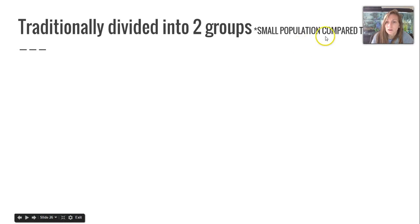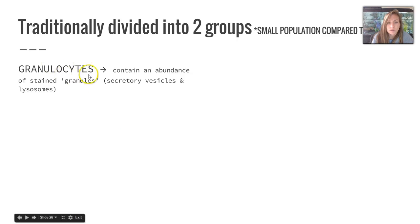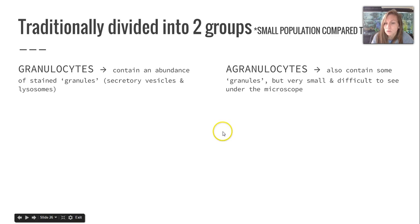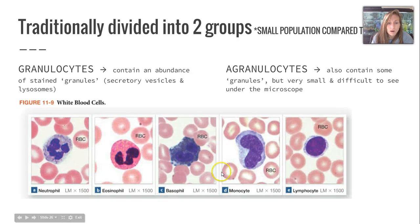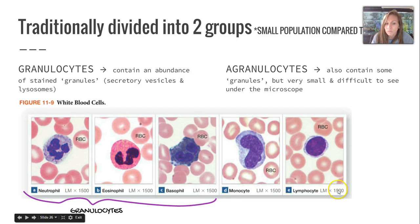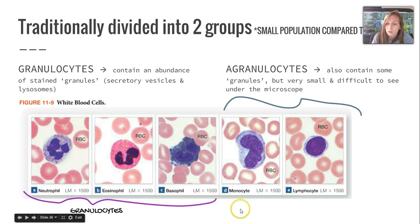White blood cells are traditionally divided into two groups, and they represent a much smaller population compared to red blood cells. One group is granulocytes, which contain an abundance of stained granules that are actually secretory vesicles and lysosomes. Then you have the agranulocytes, which is kind of misleading because they do contain granules, but they're very small and difficult to see under the microscope even when stained. The granulocytes are neutrophils, eosinophils, and basophils, while monocytes and lymphocytes are the agranulocytes. Note that agranulocytes end in '-cyte' and granulocytes end in '-phil,' which might help you remember the difference.